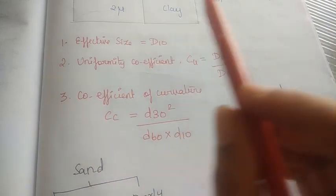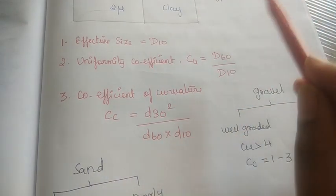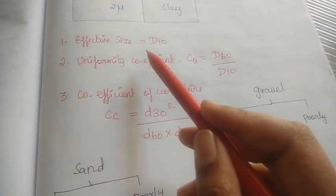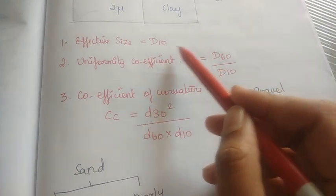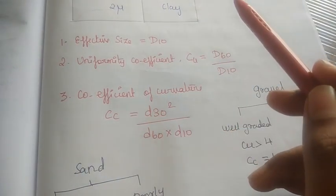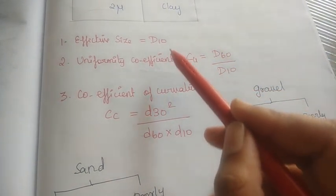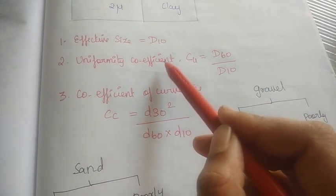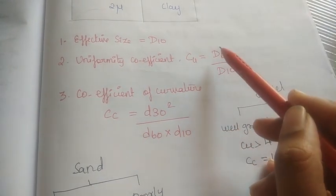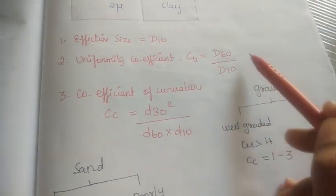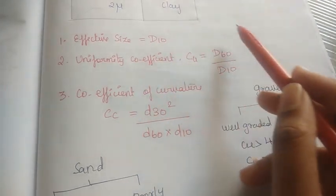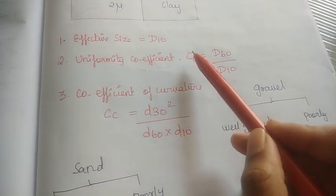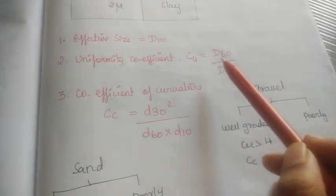Effective size is D10 — you can see this from sieve analysis. Effective size means D10, which is the diameter at 10 percent passing. The uniformity coefficient Cu is equal to D60 divided by D10. This formula is very important. Effective size D10; uniformity coefficient is D60 by D10.